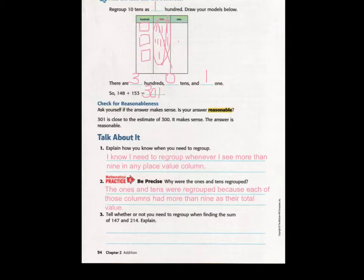Talk with your team about whether or not you need to regroup when finding the sum of 147 and 214. Be able to explain your answer of whether or not you need to regroup. Did you say yes you need to regroup? If so, you are very smart. You will need to regroup the 1's because 7 ones and 4 ones equals 11 ones which is more than 9.